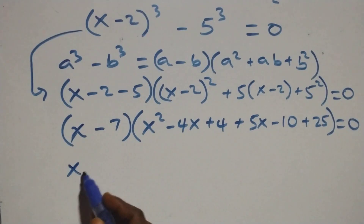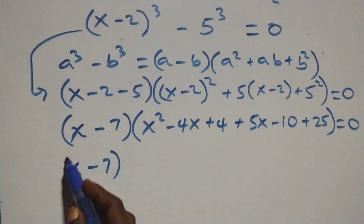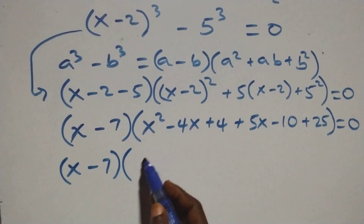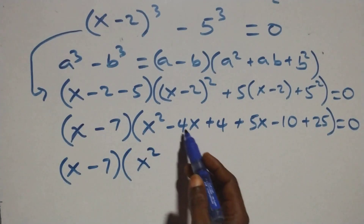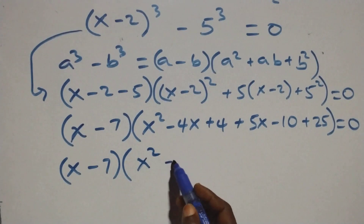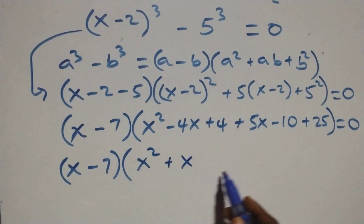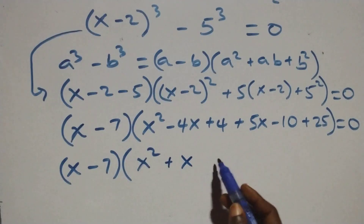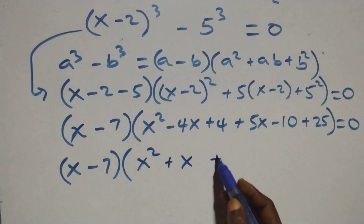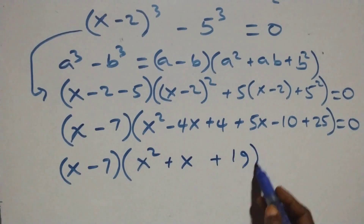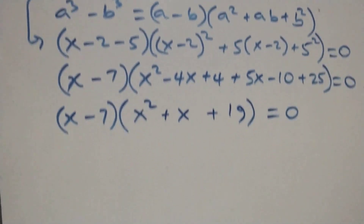This becomes (x minus 7) times an open bracket: x squared, then minus 4x plus 5x gives plus x, then 25 minus 10 is 15, plus 4 gives 19, close bracket, equals 0. So we have (x minus 7) times (x squared plus x plus 19) equals 0.